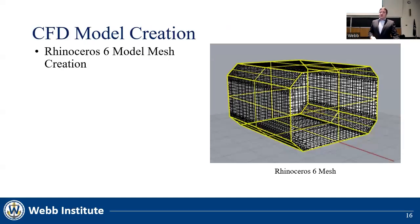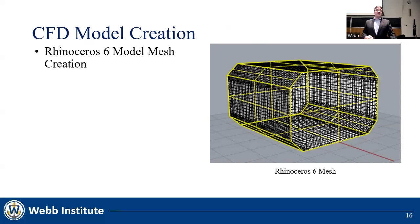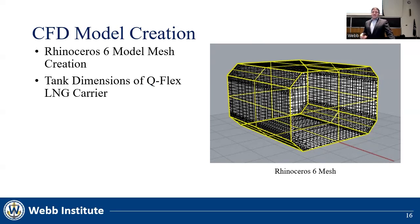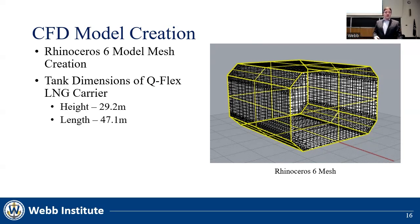Rhino 6 was used to create the geometry and mesh. The mesh was kept between 3 million and 4 million points after refinement to capture the free surface effect. The cells are a maximum of 2% of the length of the tank. Dimensions were received from industry for a Q-Flex LNG vessel: a height of 29.2 meters, a length of 47.1 meters, and a beam of 43.6 meters.